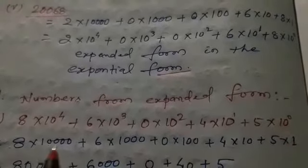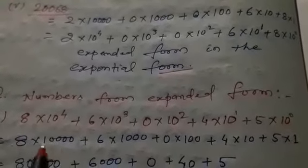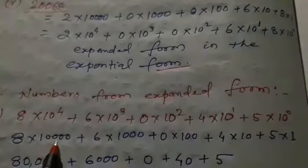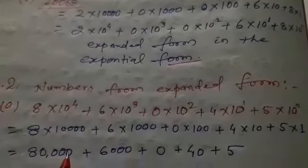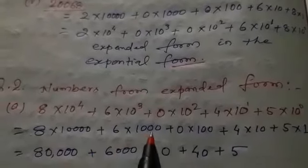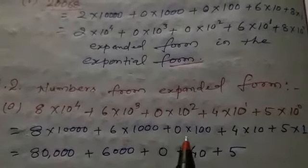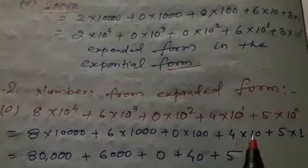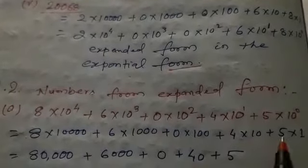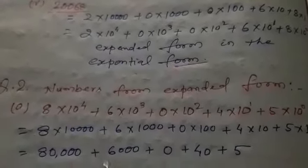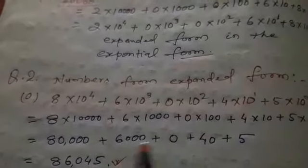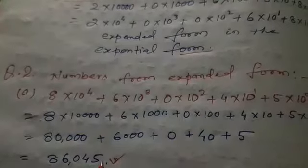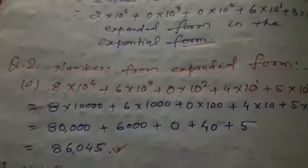Now we find the product of these numbers. 8 × 10,000 equals 80,000. Plus 6 × 1,000 equals 6,000. Plus 0. Plus 4 × 10 equals 40. Plus 5 × 1 equals 5. Finally we add them and the result is 86,045.